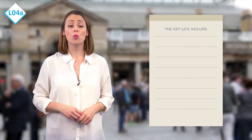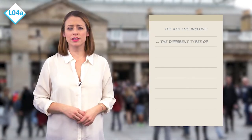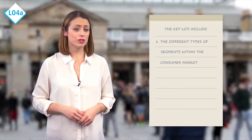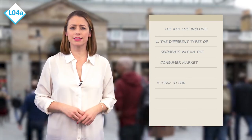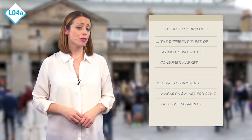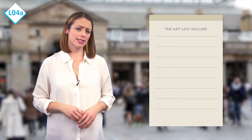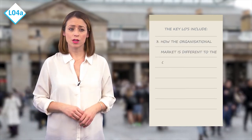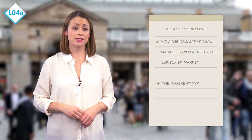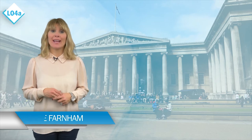Just to summarize what you should be looking out for in this subsection: one, the different types of segments within the consumer markets; two, how to formulate marketing mixes for some of those segments; three, how the organizational market is different to the consumer market; and four, the different types of organizations. Please watch this video as many times as you need before moving on to the core content section. Hi, my name is Jane and this is the core content for marketing principles learning outcome 4a.